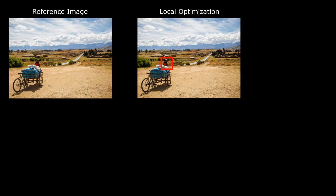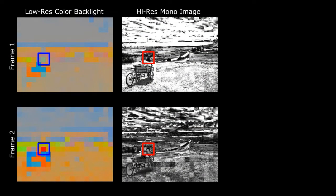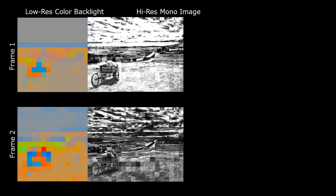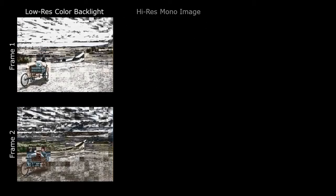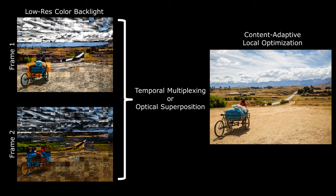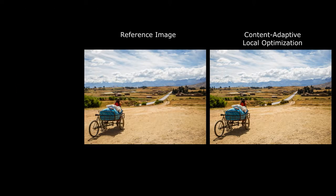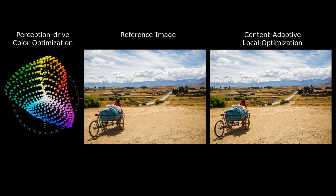Here is our method. Learning from the local image statistics and the low-pass color filtering in human visual system, we solve the problem locally. Our algorithm solves for two frames. Each contains a low-resolution color backlight array and a high-resolution monochromatic image. The monochromatic image optically modulates or attenuates the backlights, and we can temporally or optically add up the two frames. The result closely resembles the reference image, and we even improve the algorithm to consider both practical hardware constraints and perceptual effects.